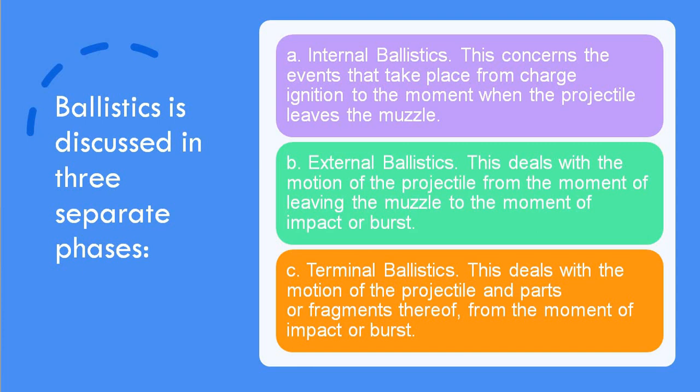Ballistics is divided into three different phases: internal ballistics, external ballistics, and terminal ballistics. Internal means the things which are happening inside the firearm — it is concerned with the charge which is ignited inside the firearm and when the particular projectile leaves the muzzle. The muzzle is basically the end of the firearm from where the bullet comes out.